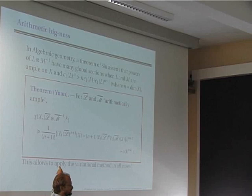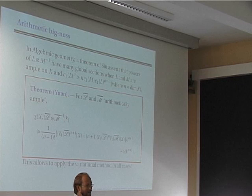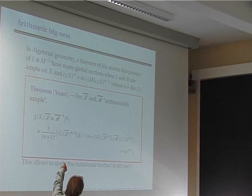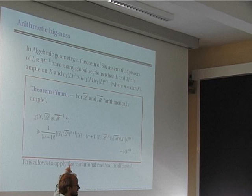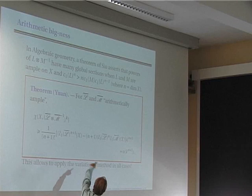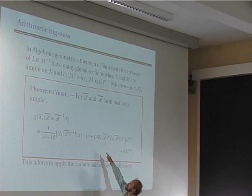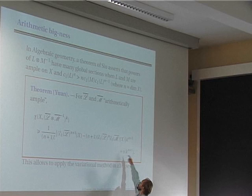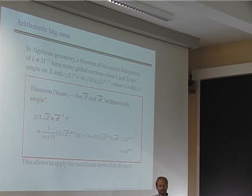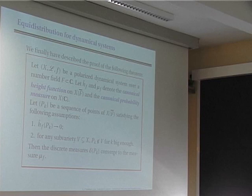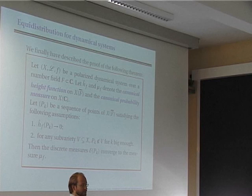Yuan's inequality gives: chi(X, (L̄ ⊗ M̄⁻¹)^k) ≥ [h(X) − (N+1)·c₁(M̄)·c₁(L̄)^N + error] · k^(N+1)/((N+1)·deg X). This allows you to apply the variational principle in general, and this concludes the description of the equidistribution theorem for polarized dynamical systems.